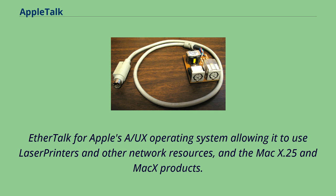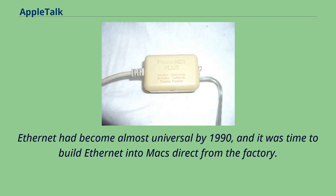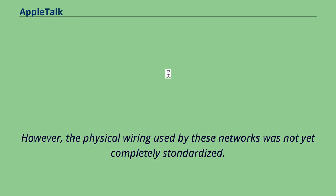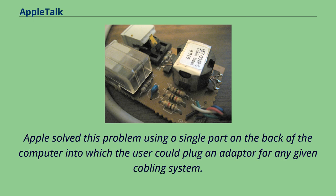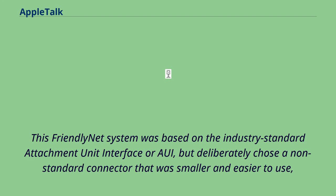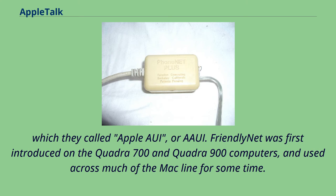Ethernet had become almost universal by 1990, and it was time to build Ethernet into Macs directly from the factory. However, the physical wiring used by these networks was not yet completely standardized. Apple solved this problem using a single port on the back of the computer into which the user could plug an adapter for any given cabling system. This AAUI system was based on the industry standard attachment unit interface, but deliberately chose a non-standard connector that was smaller and easier to use, called Apple AUI or AAUI. It was first introduced on the Quadra 700 and Quadra 900 computers.